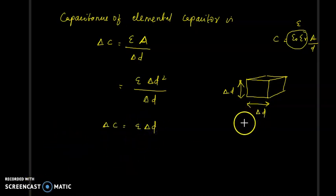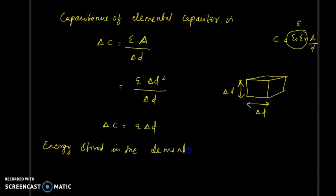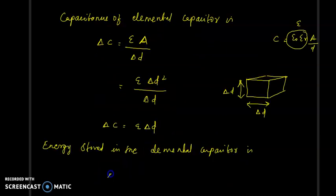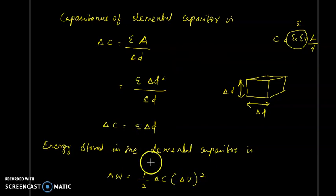Now, what is the energy stored in the elemental capacitor? We already derived the expression W equals half C V squared. The capacitance of the elemental cube is delta C, so delta W becomes half delta C times delta V squared.